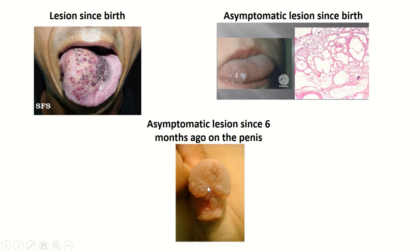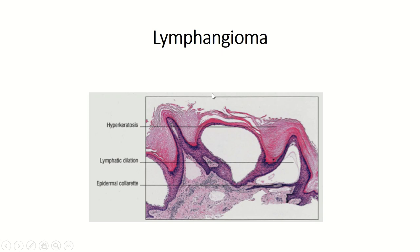The lesions of lymphangioma circumscriptum are vesicular. Histopathology includes hyperkeratosis of the epidermis, lymphatic dilation surrounded by this hyperkeratotic epidermis in the form of collarettes. So the three histopathological features are hyperkeratosis, lymphatic dilation, and epidermal collarettes.